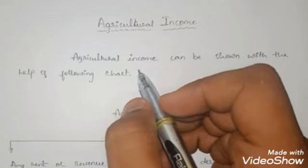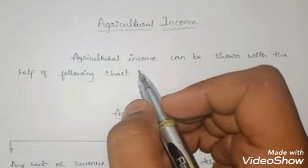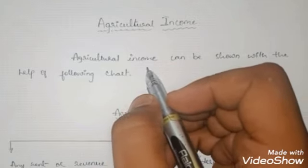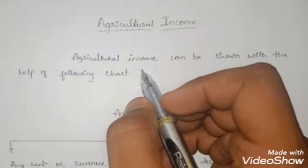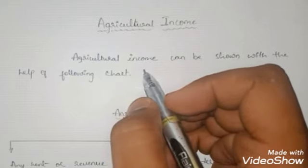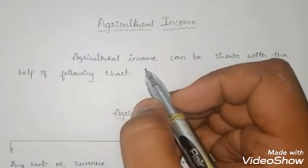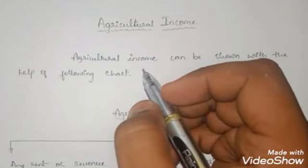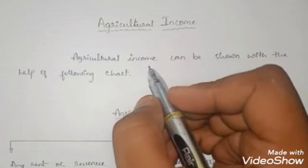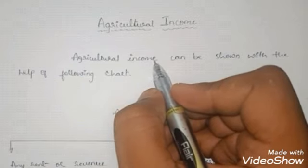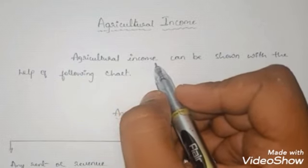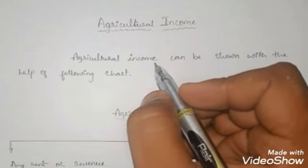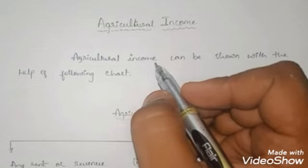The income generated from performing agricultural activities is totally exempted from tax. Exempt from tax means we do not have to pay any tax on the income earned by performing agricultural activities. This is a very important point — Section 10(1) of the IT Act 1961 says that agricultural income is totally exempted from tax in India.